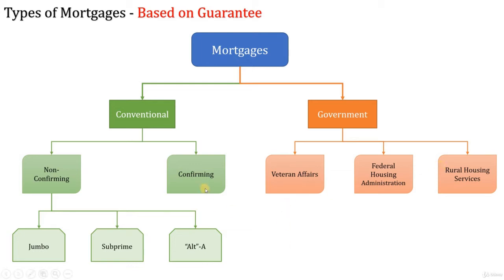Let's learn about conforming and non-conforming loans. Conforming loans meet the loan size limitations, amortization periods, and underwriting guidelines set by Freddie Mac and Fannie Mae in the secondary market. Conforming loans may be sold to Freddie Mac or Fannie Mae, which are government-sponsored entities that in turn securitize, package, and sell these loans to investors in the secondary market. We are going to learn about loan securitization and packaging of loan portfolios in later sessions.